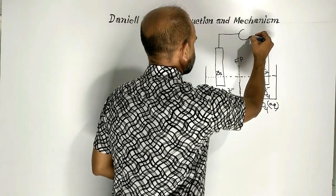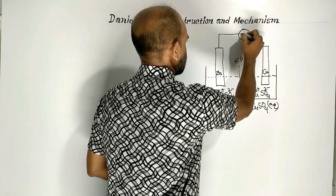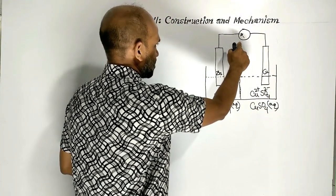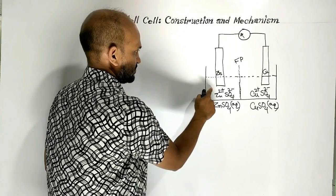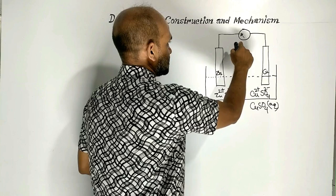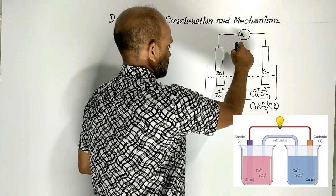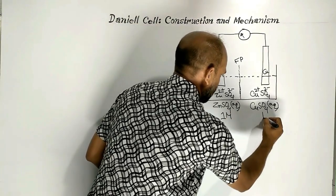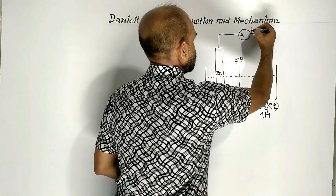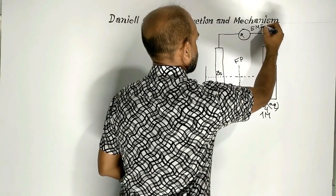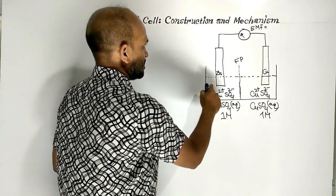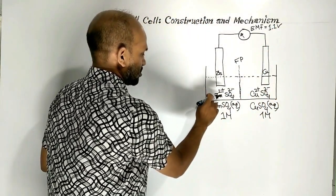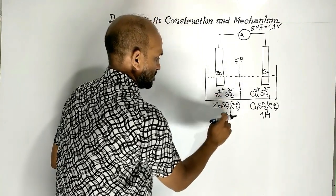Here we can place a galvanometer or an electric bulb to show the presence of electricity produced from the cell. If the concentration of the solutions is one molar, then the EMF — that is, the capacity of the cell — is 1.1 volts when the concentrations of these two solutions are one molar.